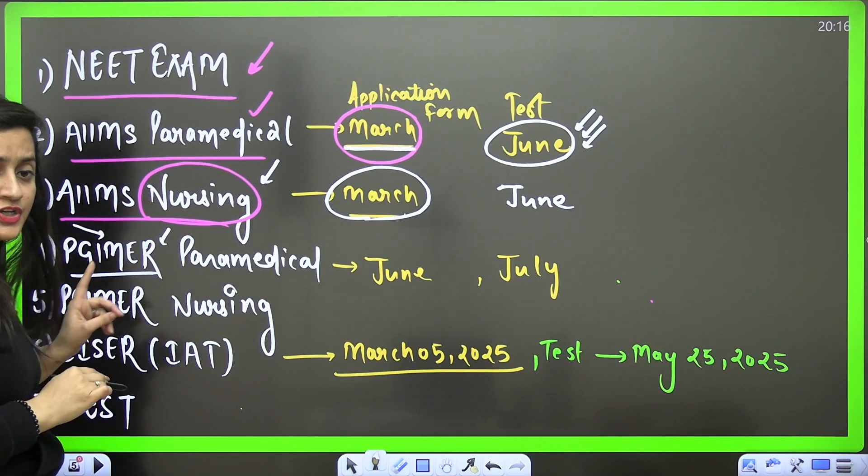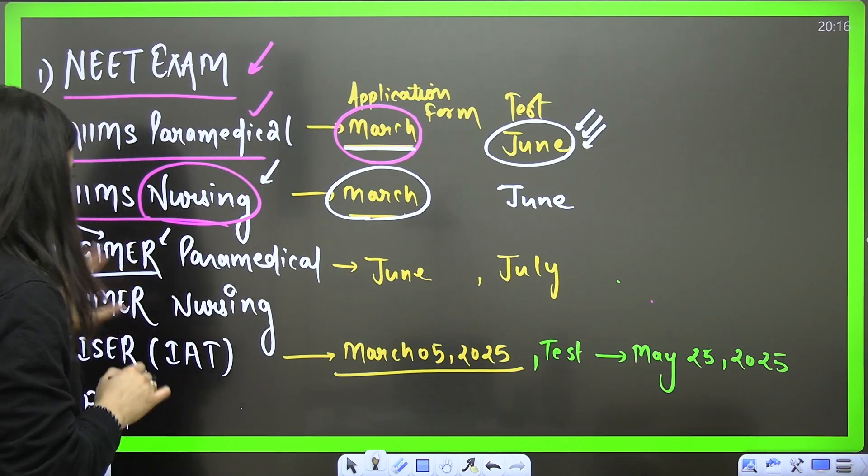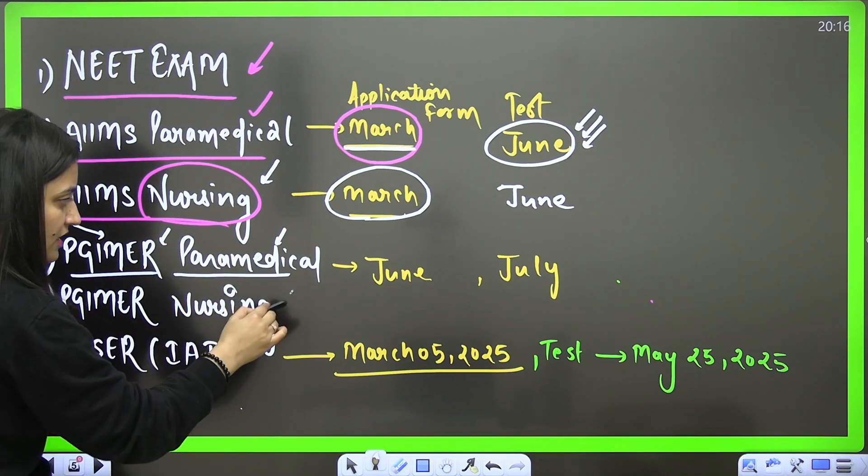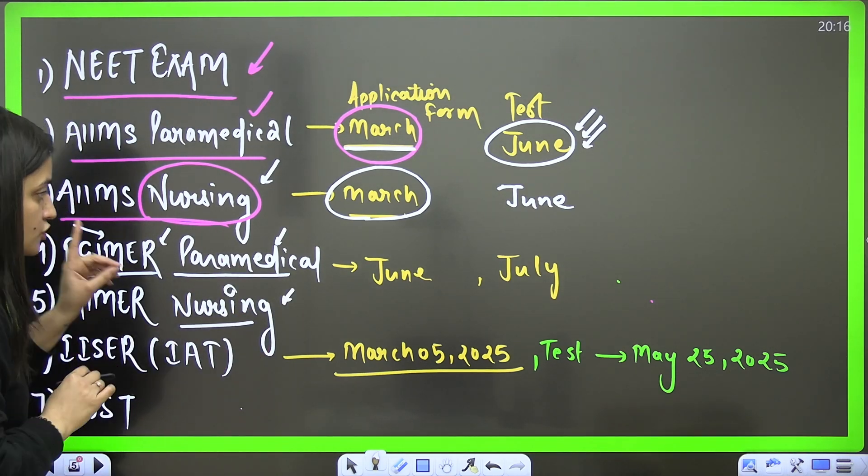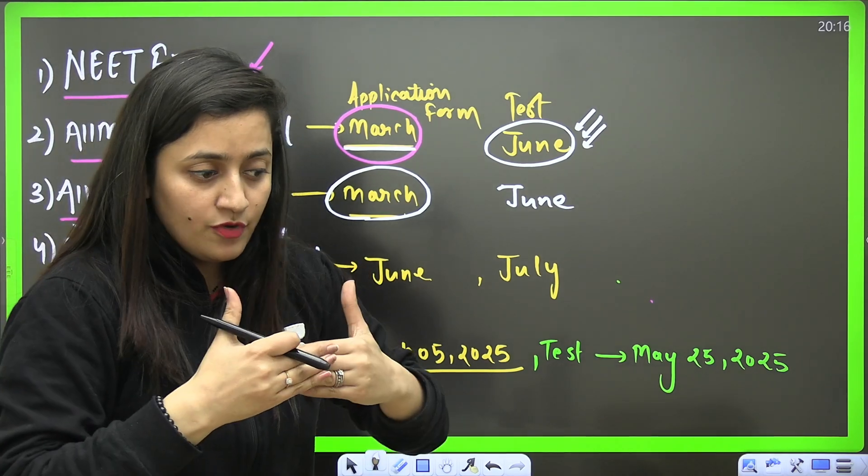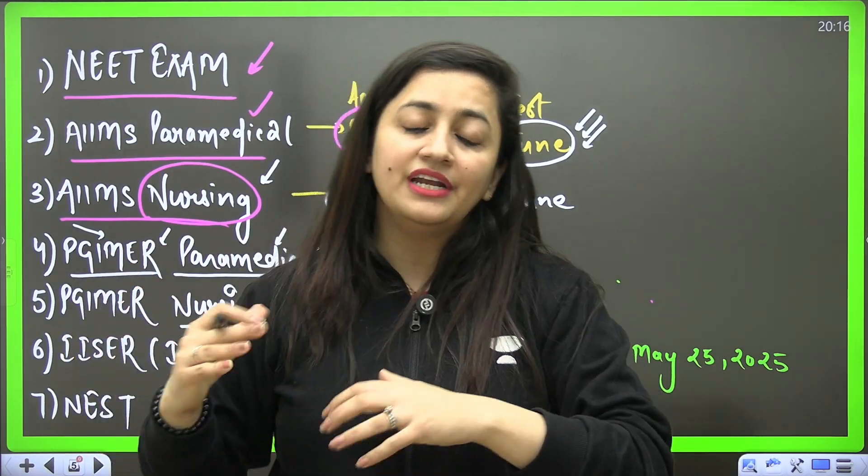Then PGIMER - it is Postgraduate Institute of Medical Education and Research. It is there in Chandigarh. For the same institute, you can fill the paramedical courses application form as well as for the nursing. So when you talk about PGIMER, if you complete paramedical courses and the nursing courses from this institute, it is also having a very good reputation.